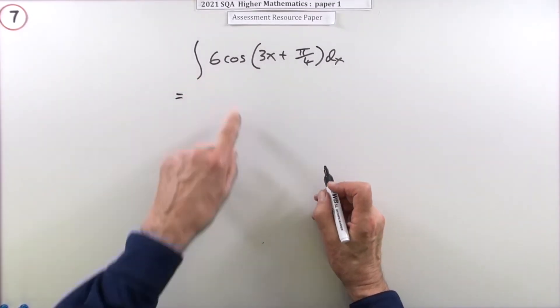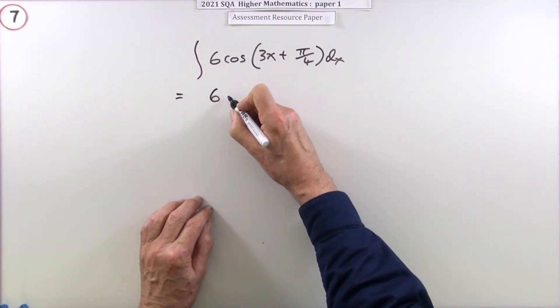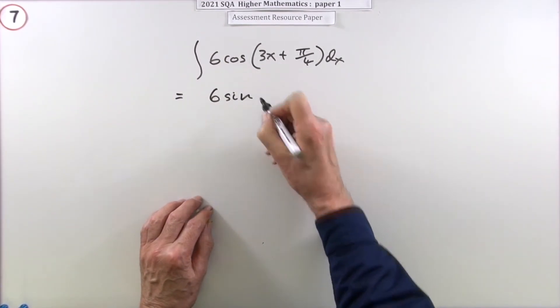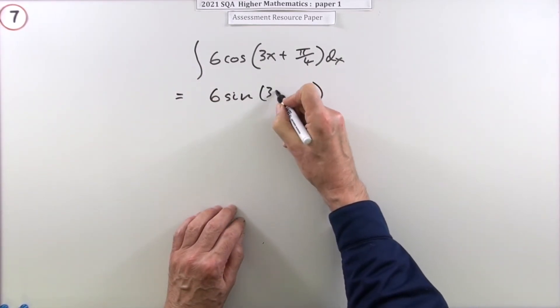And then the process is more or less the same. Integrate the outer part first of all. Well, cos would integrate back to sine. So six cos would have come from six sine. Differentiating that would have produced that. Leave that part alone.